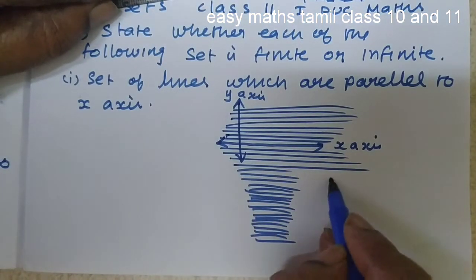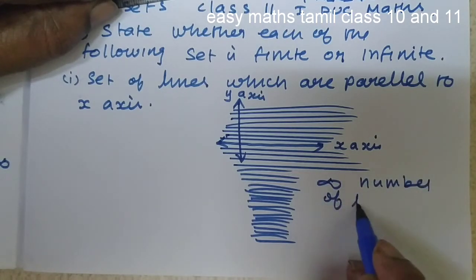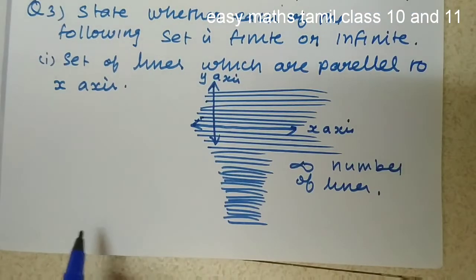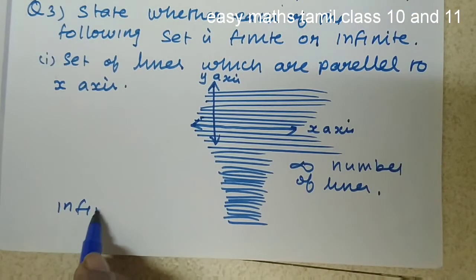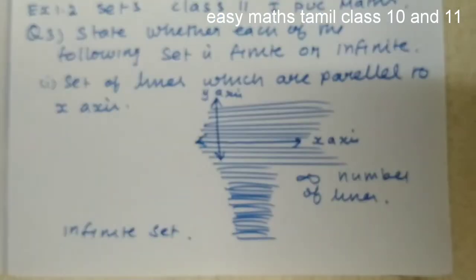So, infinite number of lines. The following set is an infinite set. Infinite lines can be drawn.